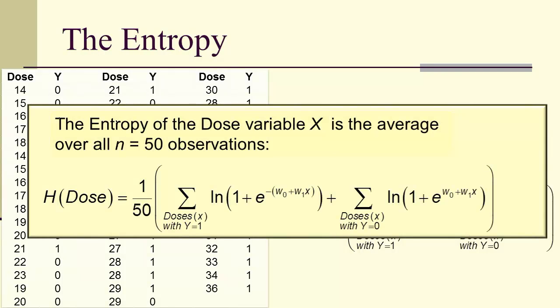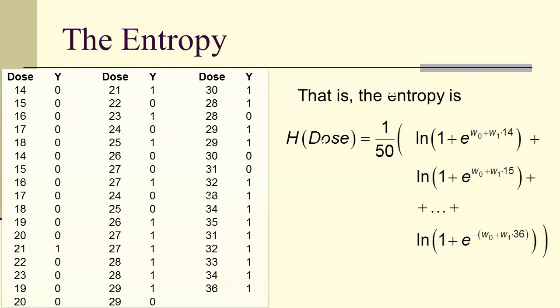And if we substitute our information models in, we end up with this entropy for doses. And notice here's our actual entropy.